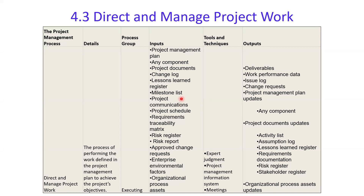Additional inputs include the requirement traceability matrix — defining what requirements you'll work on — and the risk register. If a risk was not mitigated and becomes an issue, it becomes an input to Direct and Manage Project Work. Approved change requests and organizational process assets are also inputs, representing the different sources of work coming in.